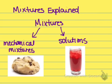Mechanical mixtures can be broken down into smaller categories. There are two scientific classifications for mixtures: mechanical mixtures and solutions. Cookie dough is an example of a mechanical mixture, and kool-aid is an example of a solution.